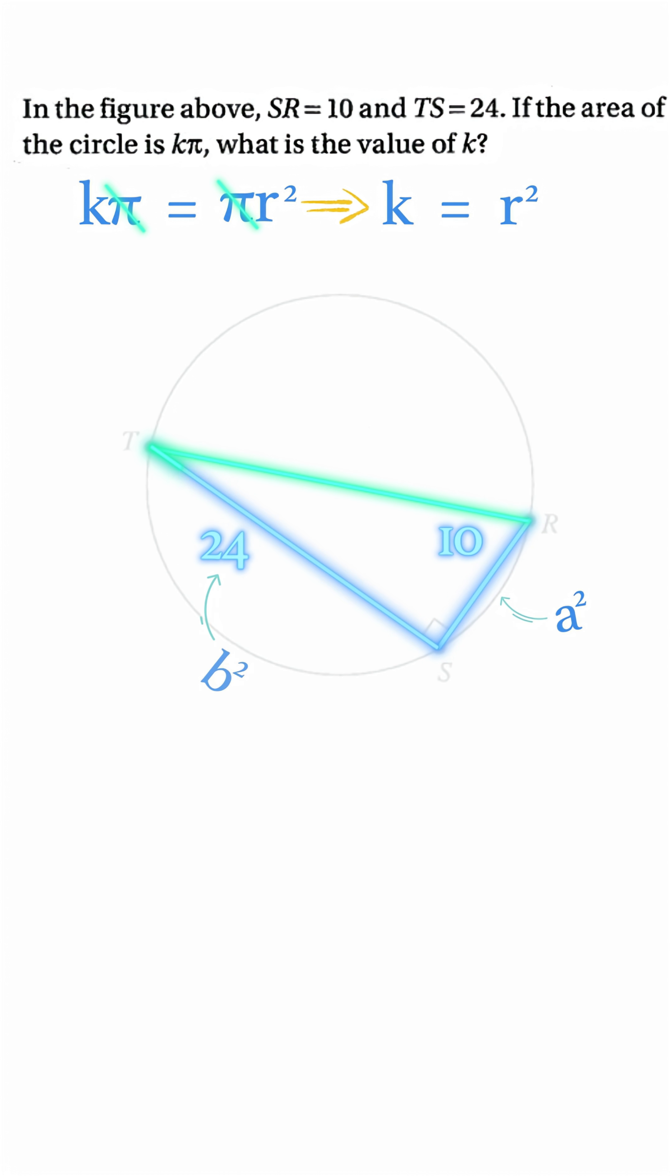Now, use the Pythagorean theorem. 10 squared plus 24 squared equals c squared.